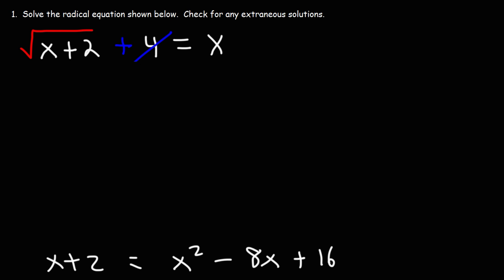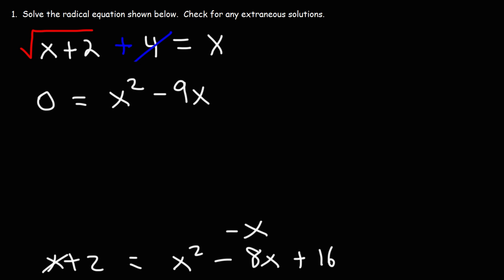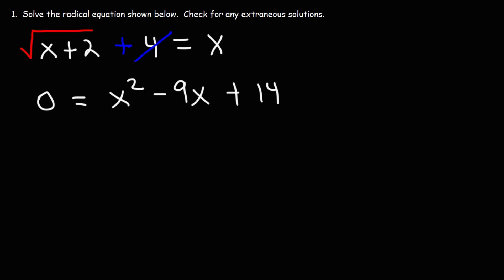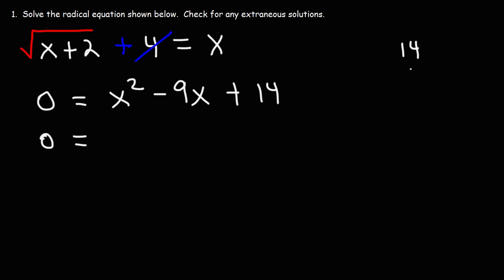To solve for x, we need to move everything from the left side to the right side. Moving x to the other side gives negative x. Negative 8x and negative x combine to negative 9x. Moving the 2 to the other side gives negative 2 on that side. 16 minus 2 equals positive 14. Now we need to factor — what two numbers multiply to positive 14 and add to negative 9? We have 1 and 14, and 2 and 7.